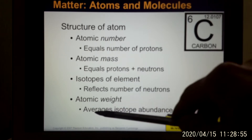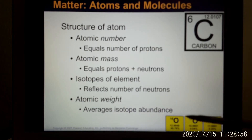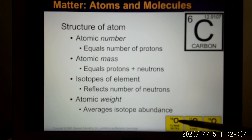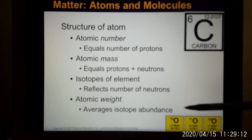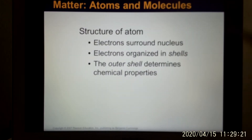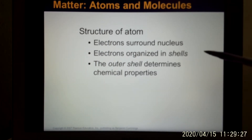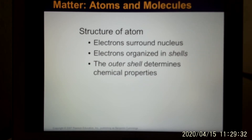Atomic weight is the average isotope abundance. Like oxygen — over 99.8% is oxygen-16, and they can have 17 and 18. The reason is their number of neutrons is different. So they calculate all of them for this atomic weight — that's what we call isotopes. And the structure of the atom is that the electrons stay outside. We focus on the electron because that's where chemical processes happen — it happens in the shell, especially the outer shell. This is where chemical bonds happen.